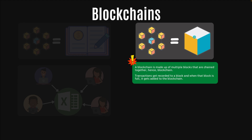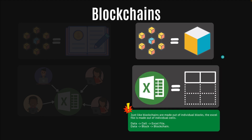A blockchain is made out of multiple blocks that are chained together — hence blockchain. Transactions get recorded onto a single block, and that block, when it becomes full, gets added to the blockchain. So a block is just a container for transaction data. Just like blockchains are made out of individual blocks, an Excel file is made out of individual cells. A cell just contains data, and if you add a bunch of cells together with data in them, you have an entire Excel file. It's the same way with blockchains.